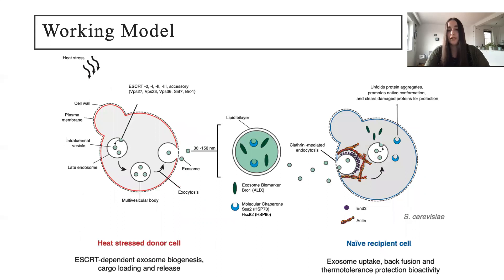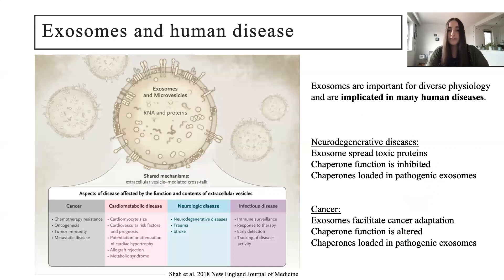All together, we saw that yeast cells, just like human cells, communicate between one another using exosomes. Molecular chaperones that promote cell survival are loaded into these exosomes and confer thermal tolerance protection to recipient cells. Basically, when a yeast cell takes up exosomes that contain chaperones, they help to refold proteins and clear toxic aggregates, helping that cell to survive. These findings implicate yeast exosomes in cellular proteostasis and highlight similarities between yeast and human exosome biology.